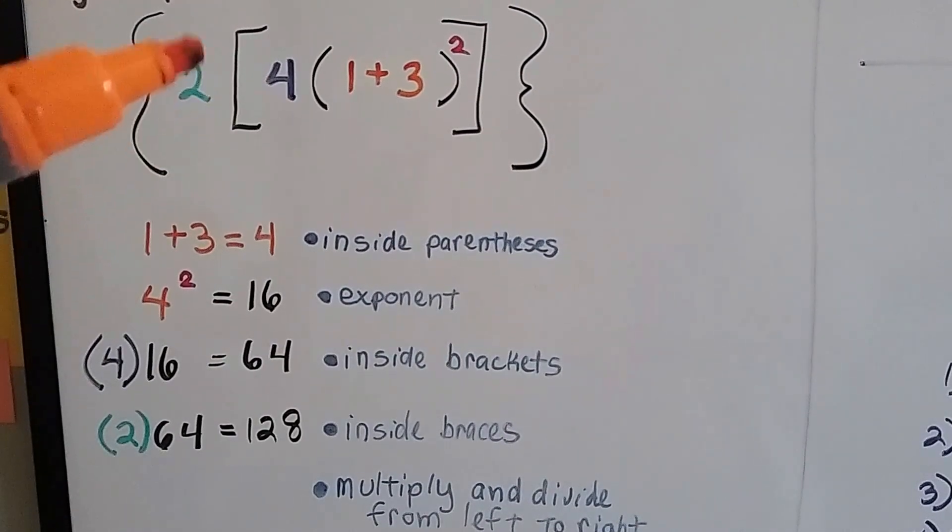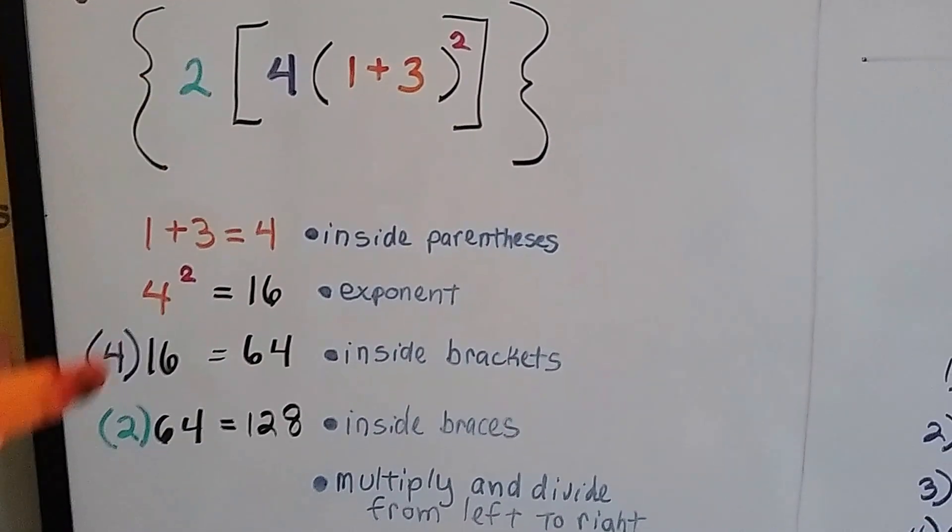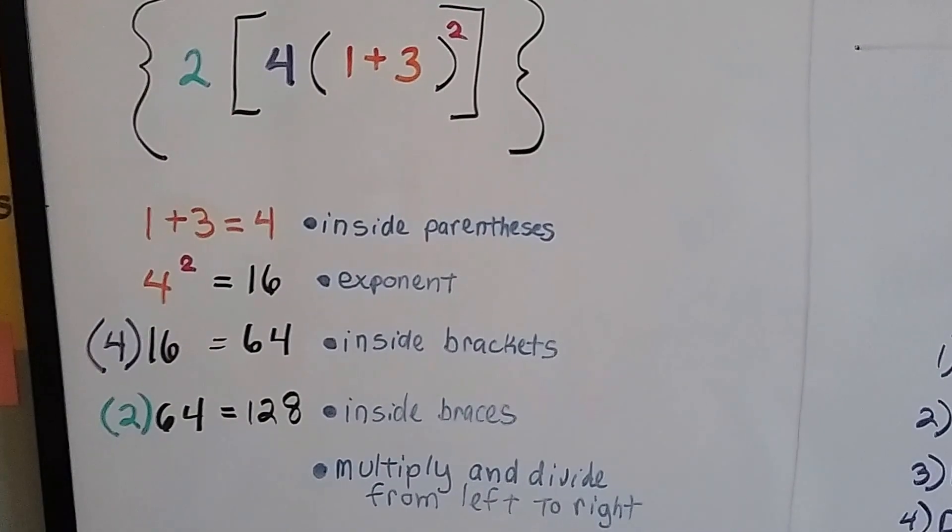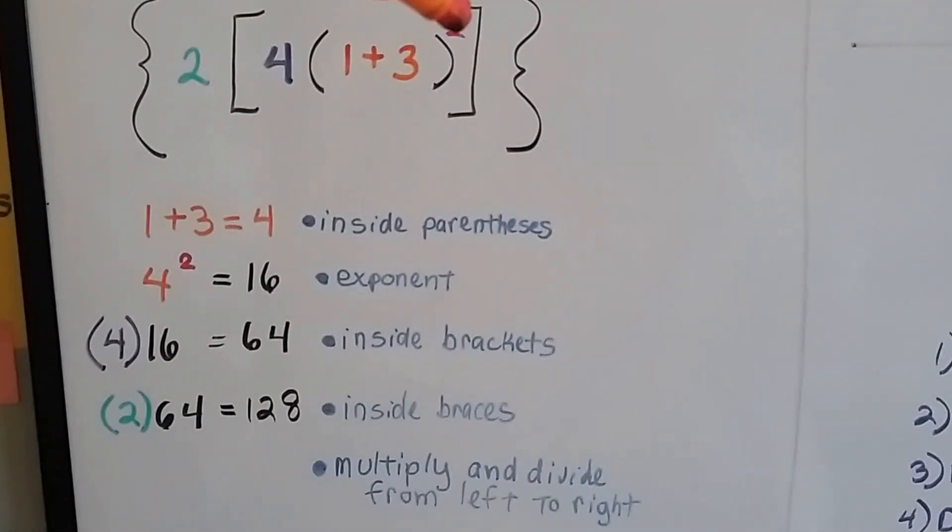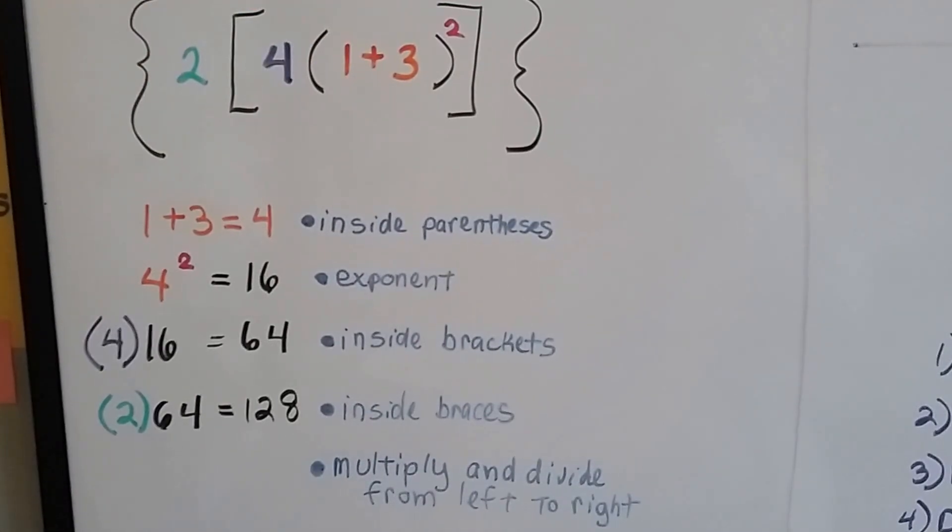Now we're going to do out here, which is inside the braces. We're going to multiply it by 2 and get 128. So we started here, we did our exponent, we did our 4, and then we did our 2, and slowly moved our way outward.